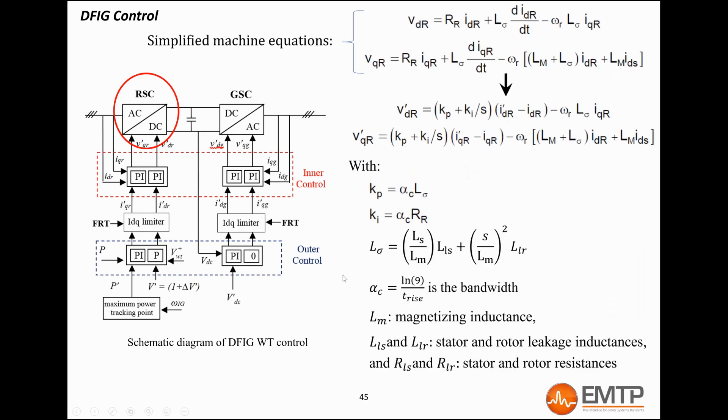The inner loops control the converter voltage to follow the references of the outer loops. Their gains, which are the same for d and Q-axis, are calculated as shown here, using the machine parameters and following the internal model control method. Here, at the top, you can see the simplified induction machine equations for both axes. The variation of the stator flux on both axis is neglected here. Once the internal model control method is applied, the equations are like here. You can see the definition of each parameter below.